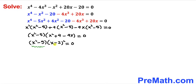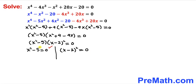We now have two factors equal to zero, so we separate them. For the first equation, x² minus 5 equals 0, moving negative 5 to the other side gives x² equals 5. Taking the square root of both sides, x equals positive or negative square root of 5.